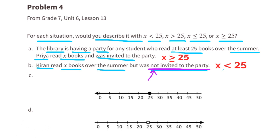Option C is a number line with the point above 25 colored in, and the arrow is pointed to the left. That means x is less than or equal to 25. Option D is a number line that has the point above 25, but it's not colored in — it's only circled — and it's pointed to the right. That means x is greater than 25.